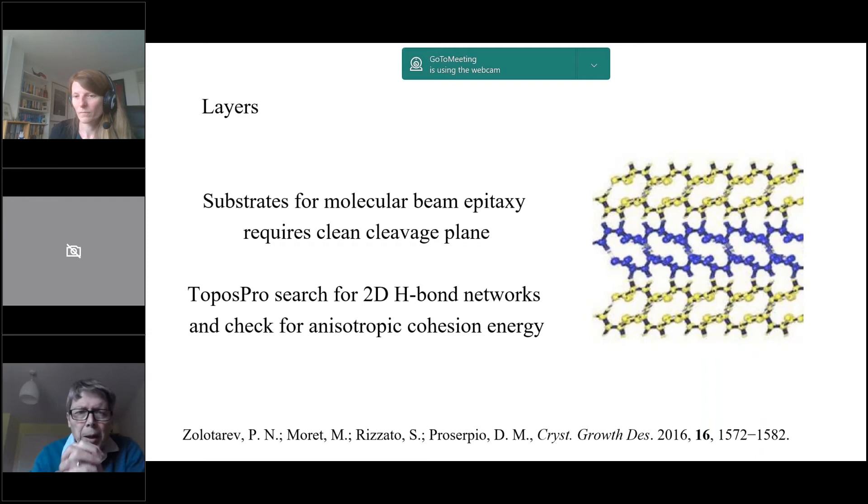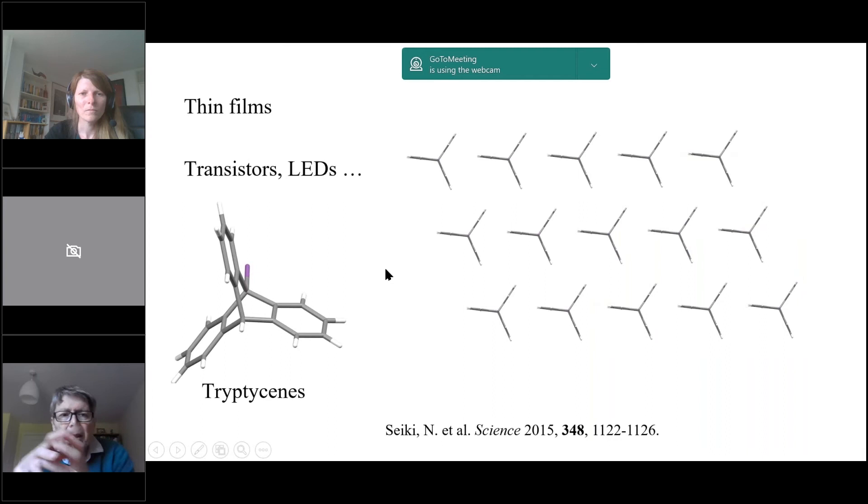Now I'm going to move on to something even more difficult: layers. Layers are a really hot subject at the moment. I'm going to give you three examples. Aso and his colleagues wanted to find substrates for molecular beam epitaxy, and what you need for that is a crystal that shows a very clean cleavage plane on which you can deposit thin film. They used Topos Pro, which is a Russian program, to search the CSD for structures with two-dimensional H1 networks—2D but not 3D. Then from the hits they got, they used PIXEL to look for structures with highly anisotropic cohesion energy, in other words so that the interactions within the layer are much stronger than the interactions perpendicular to the layer, which then implies that you can have a clean cleavage plane between them. They found some very nice alternative substrates that way.